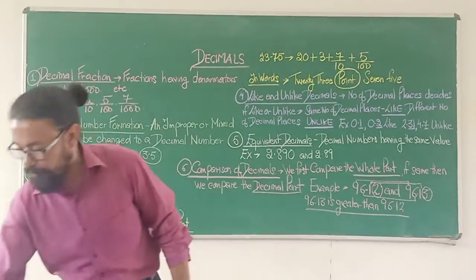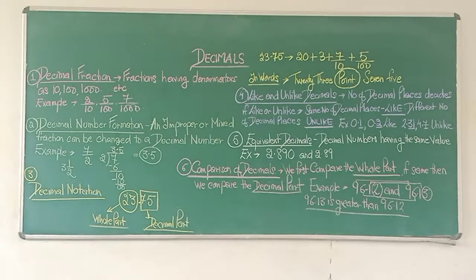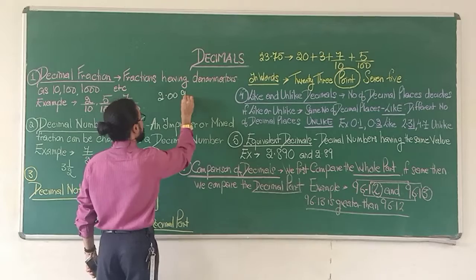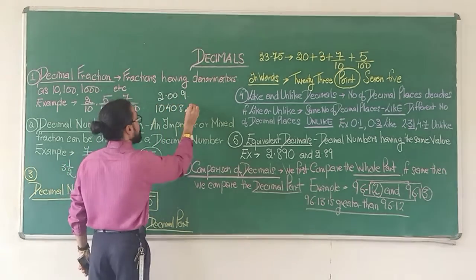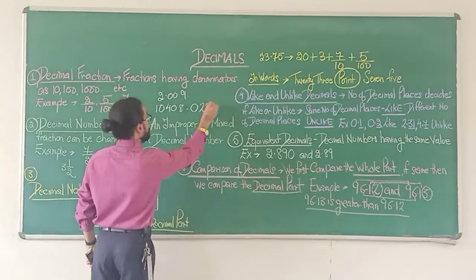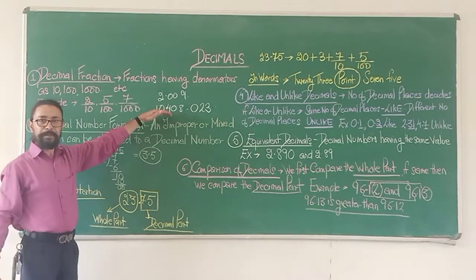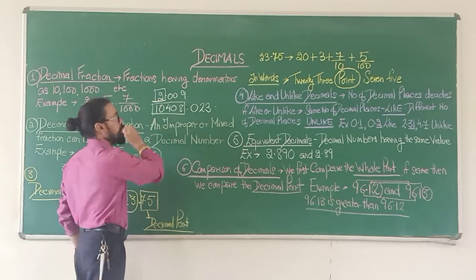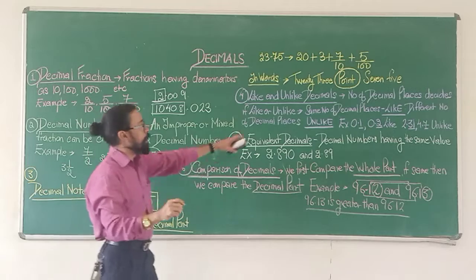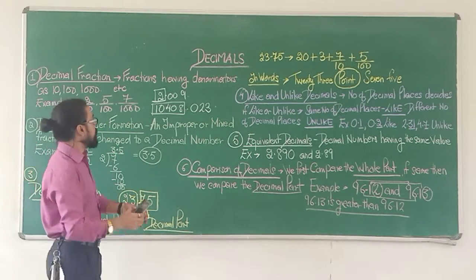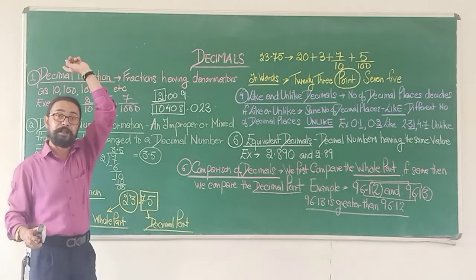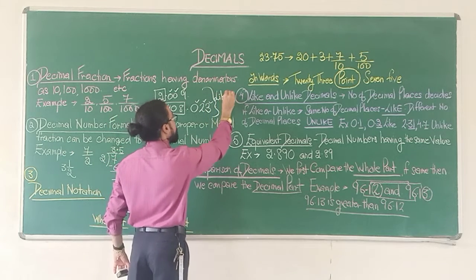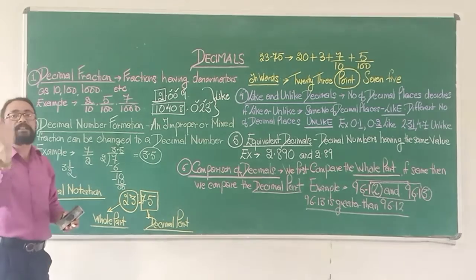Let's take an example: 2.009 and 10408.023. What is the answer? Both these decimal numbers are like decimals. The fact that one whole number is 10,408 and the other is just 2 has nothing to do with like or unlike. It is the number of decimal places that matters, not the whole number. Both 2.009 and 10408.023 have 3 decimal places each — so both are called like decimals.